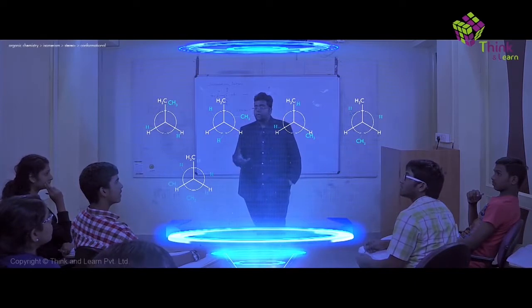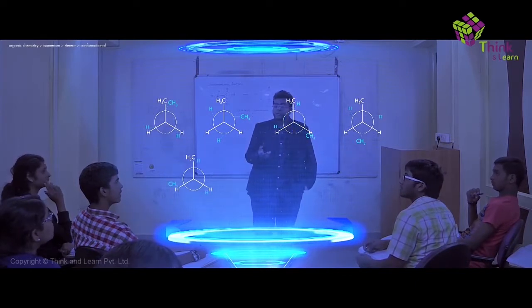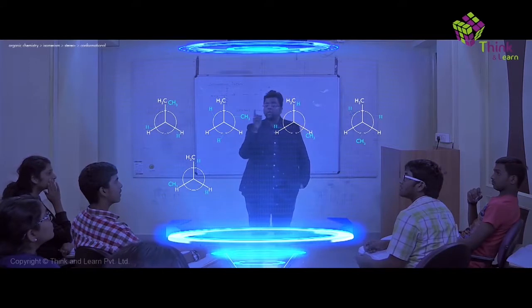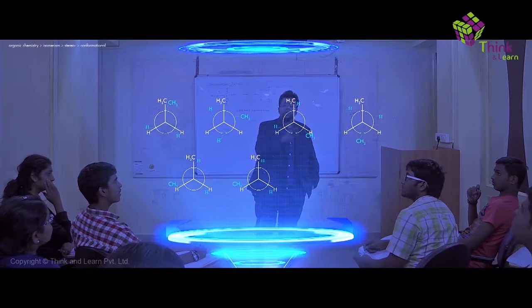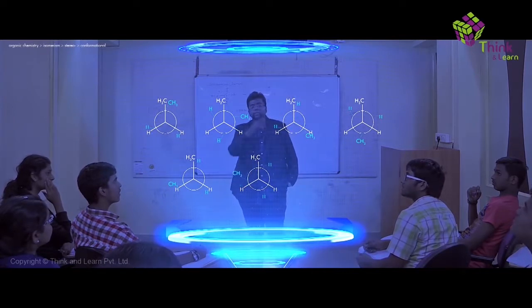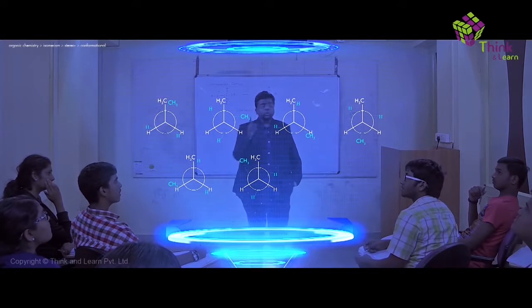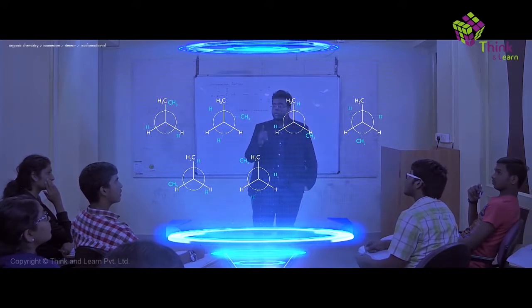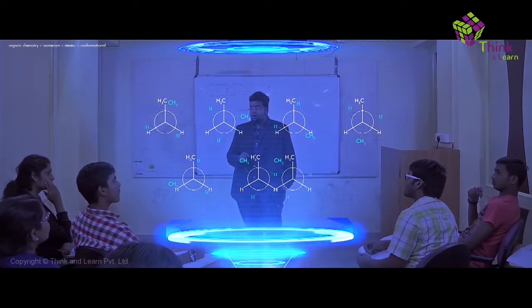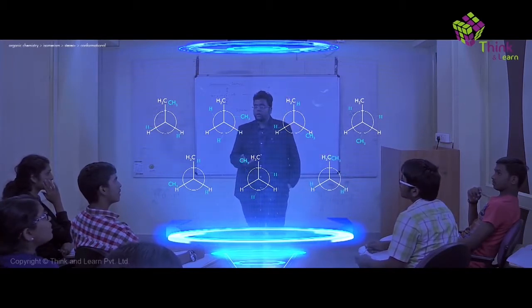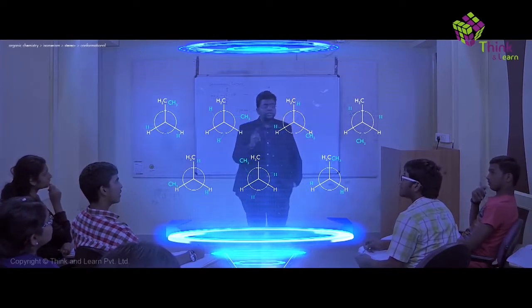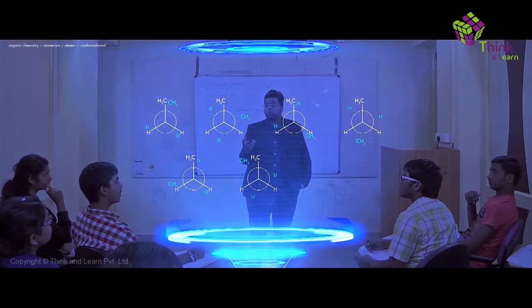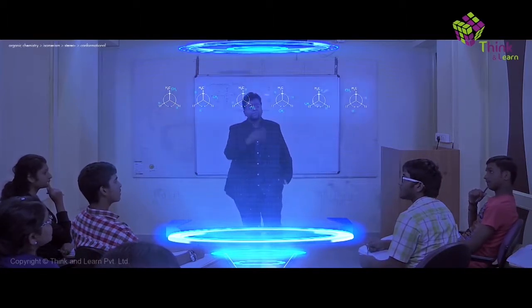If I move it by 60 degrees more, you get another gauche conformation, but if you look carefully it's exactly the opposite of the second one. Then finally, moving 60 more degrees brings you back to the first conformation. So if the dihedral angle is 0 degrees or 360 degrees the conformation is the same. These are the five different conformations of butane.